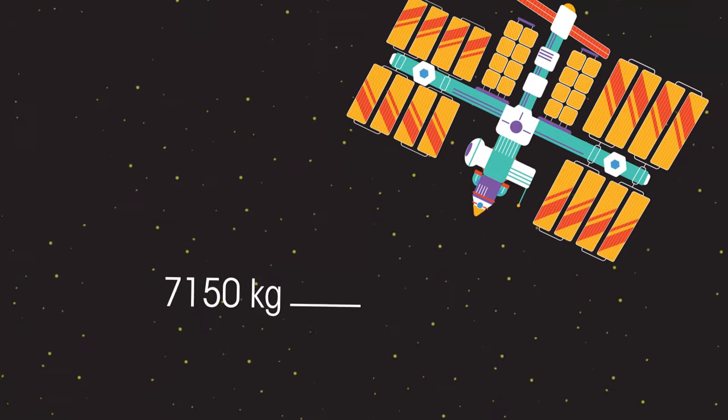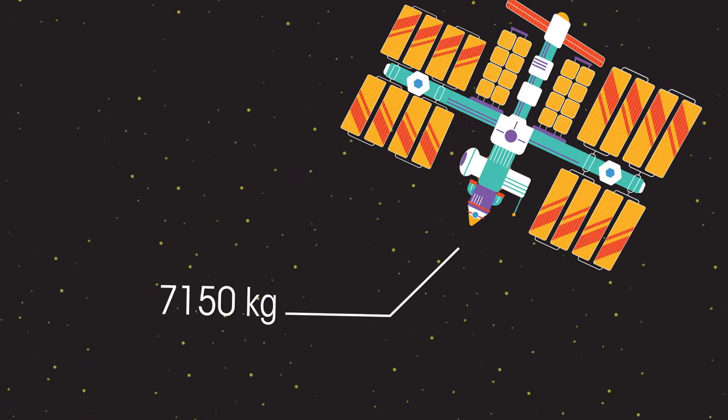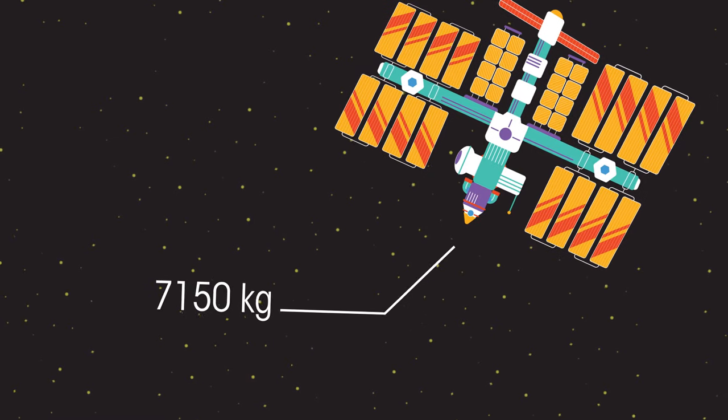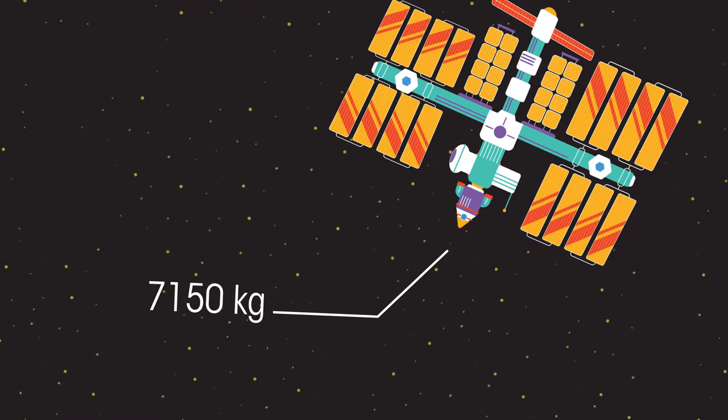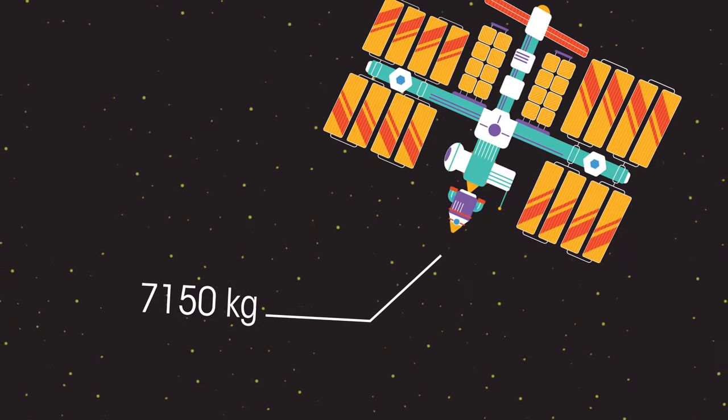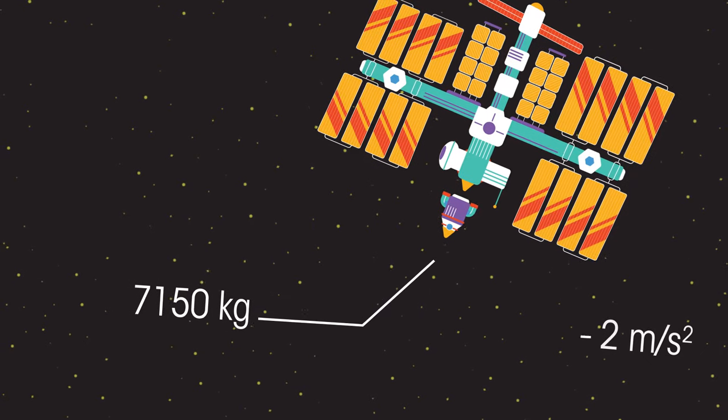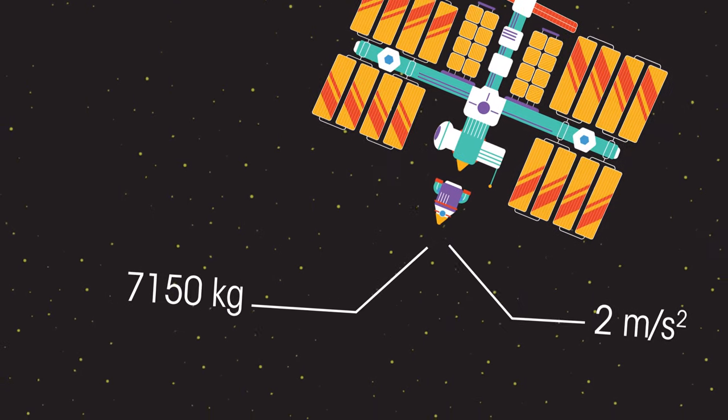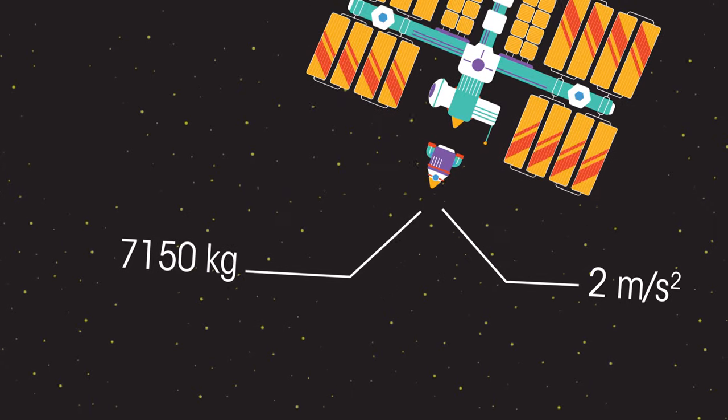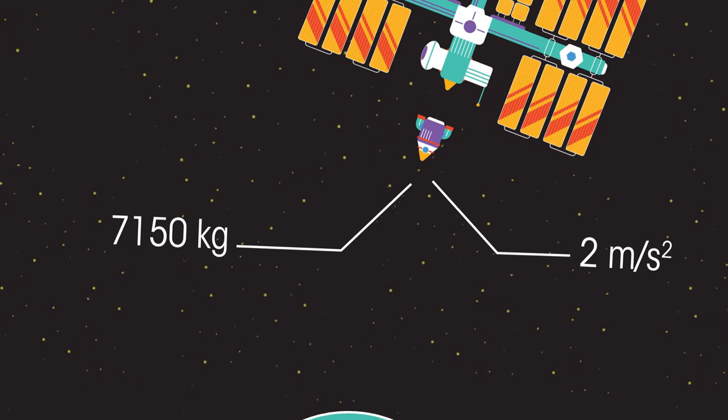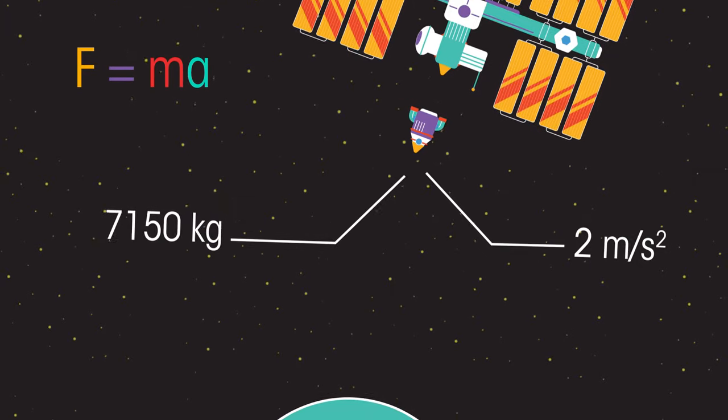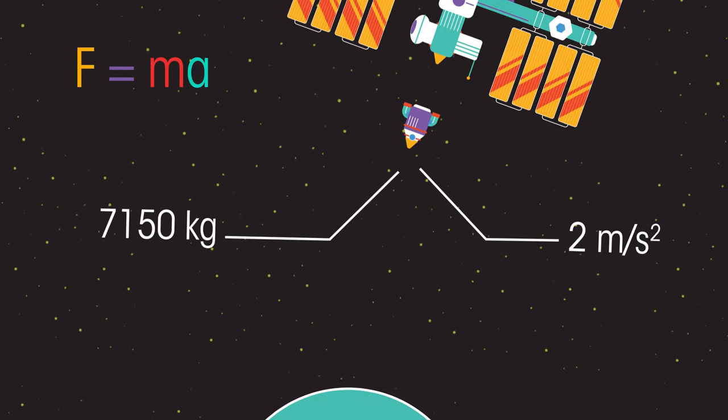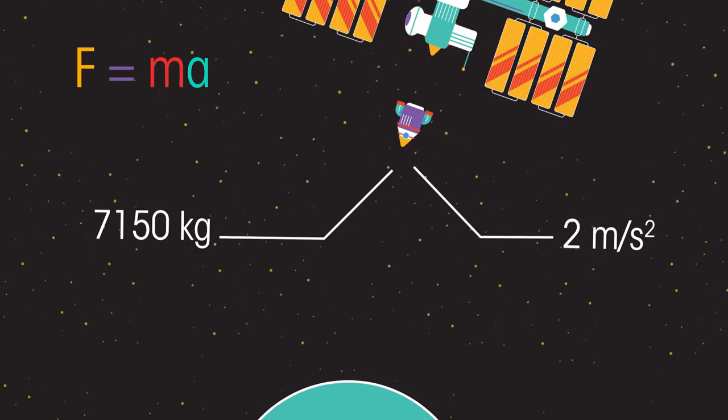A spacecraft with a mass of 7,150 kilograms accelerated away from the International Space Station towards its re-entry point with an acceleration of 2 meters per second per second relative to the International Space Station. Calculate the resultant force on the spacecraft. Pause the video and work it out.